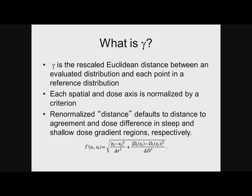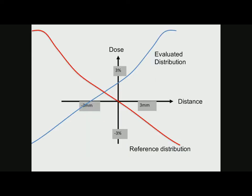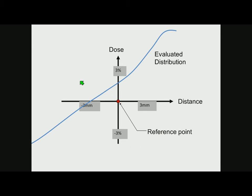So what is gamma? This is a formal definition: it's really the distance between two dose distributions, and by distance we mean including dose and physical distance. I'll show in one dimension — I have distance on one axis and dose on another, with scales of three millimeters and three percent. I've got two dose distributions: the red is the reference and the blue is the evaluated.